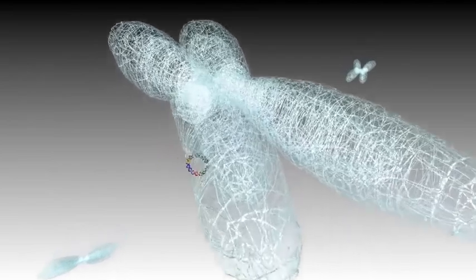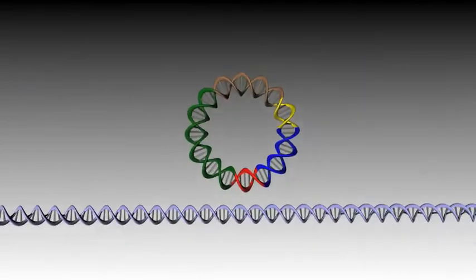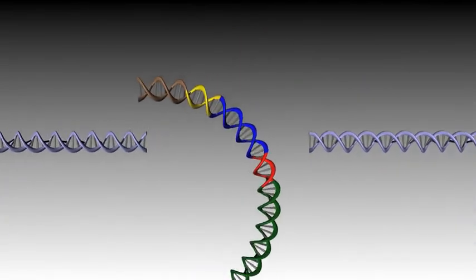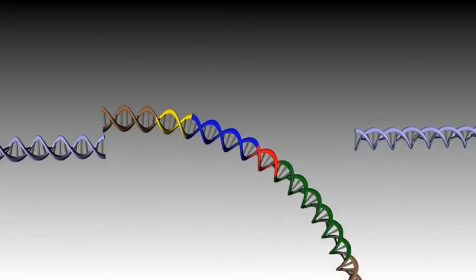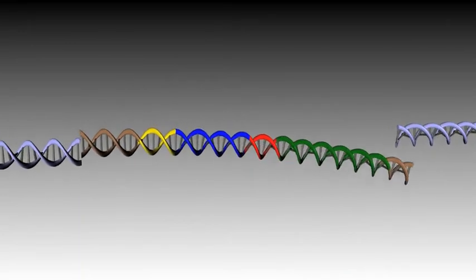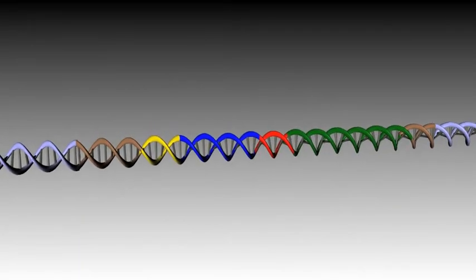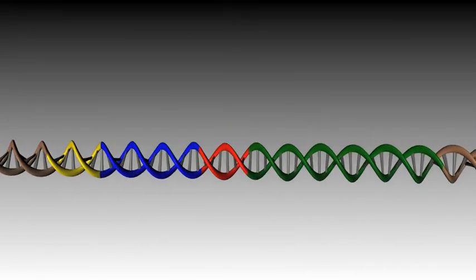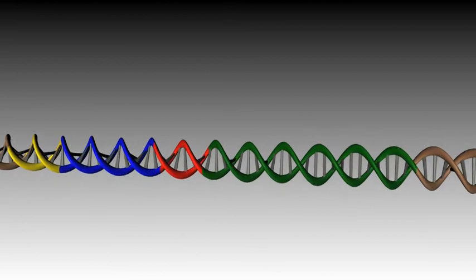After transfection, the plasmid eventually integrates into the host's genome, and subsequently a stable cell line is selected via the selection marker.